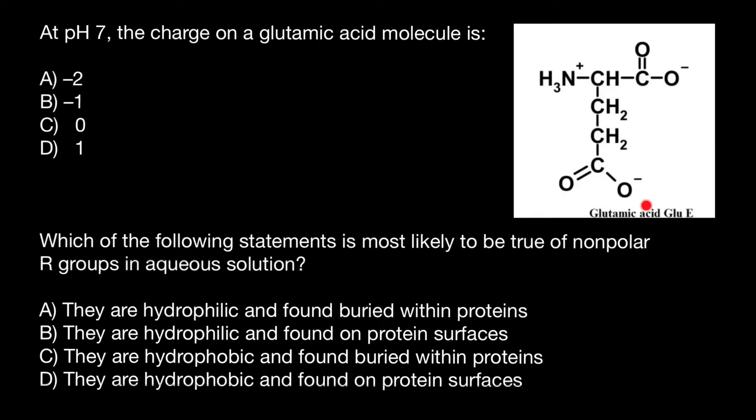But two amino acids, glutamic acid and aspartic acid, also have a carboxyl group in the R chain, so they have one more negative charge. So the correct answer is that at pH 7, and normal internal pH of our blood is close to 7.4, the charge would be negative one. The answer is B.